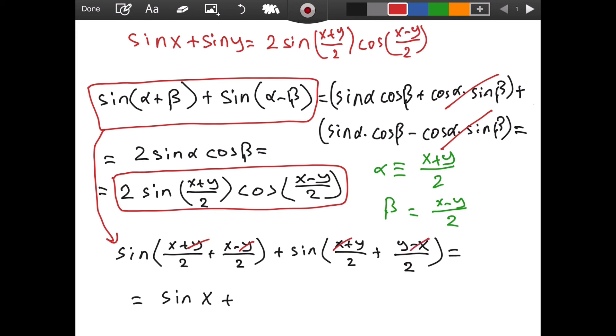Then this is 2y over 2, which is just y. So we have sine of y, which means this part is equal to sine of x plus sine of y.